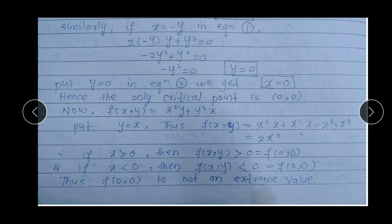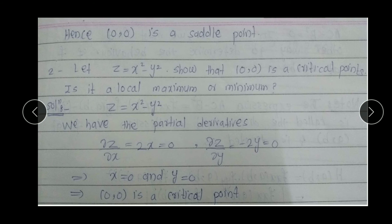Therefore F(0,0) is not an extreme value. No extreme value exists here because for some points F is positive and for others F is negative. For an extreme value, F must be either consistently greater or consistently less. Hence (0,0) is a saddle point — it is neither minimum nor maximum, so (0,0) is a saddle point.